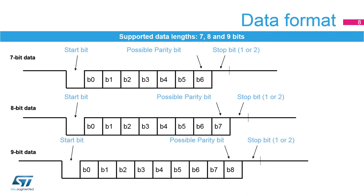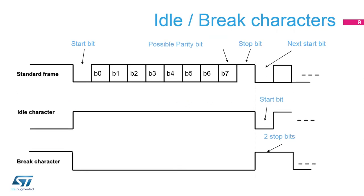Finally, one or two stop bits, where the line is driven high, indicate the end of the frame. This slide shows an example of an 8-bit data frame configured with one stop bit. An idle character is interpreted as an entire frame of ones; the number of ones will include the number of stop bits as well. A break character is interpreted as receiving all zeros for a frame period. At the end of the break frame, two stop bits are inserted.